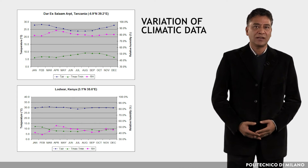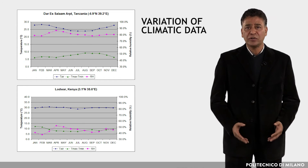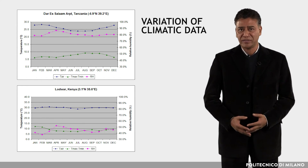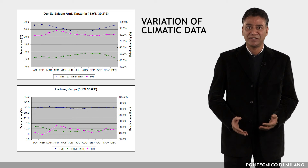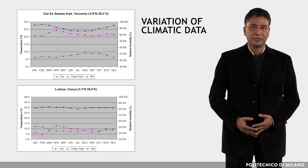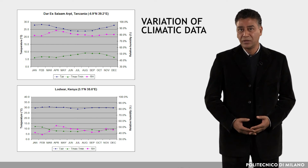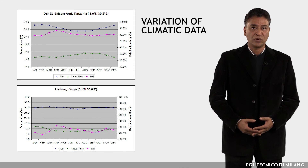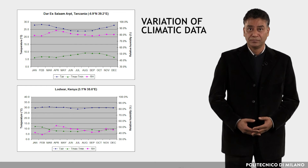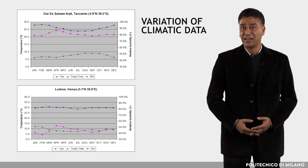Finally, climatic data analysis in detail is carried out according to their average hourly range, thereby deriving design strategies. These figures show the variation of monthly mean values of external air temperature and relative humidity for two locations of EAC: Dar es Salaam in Tanzania and Lodwar in Kenya.